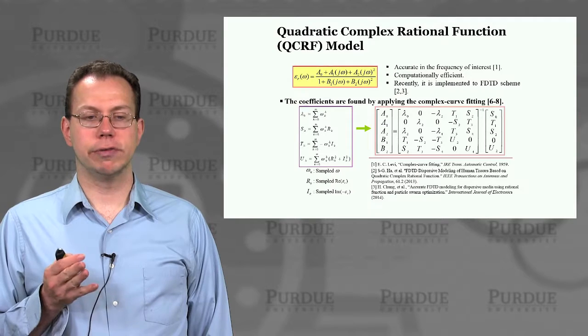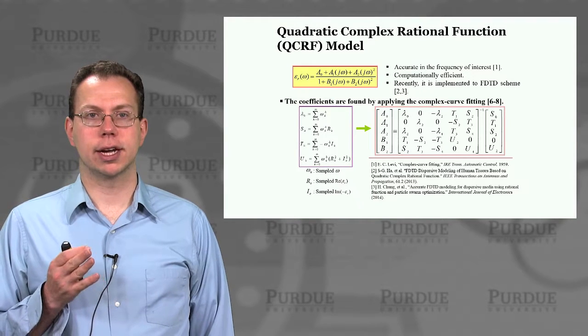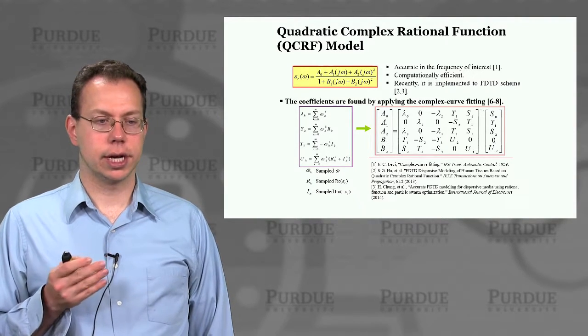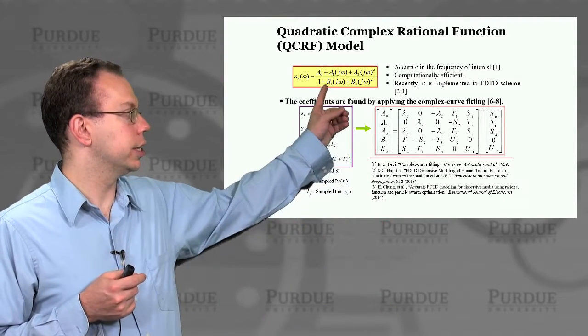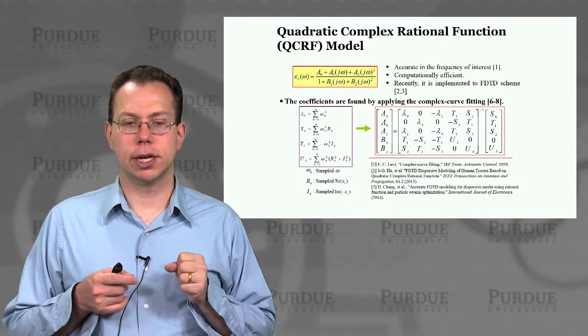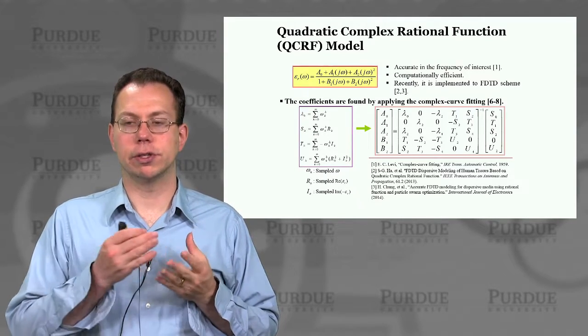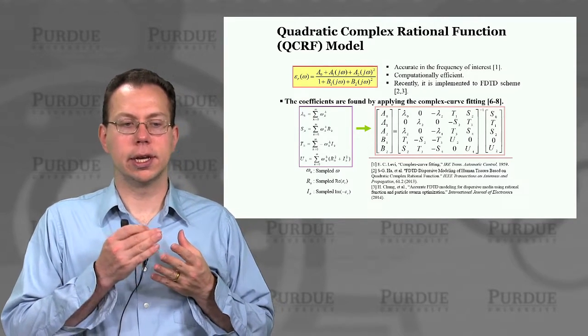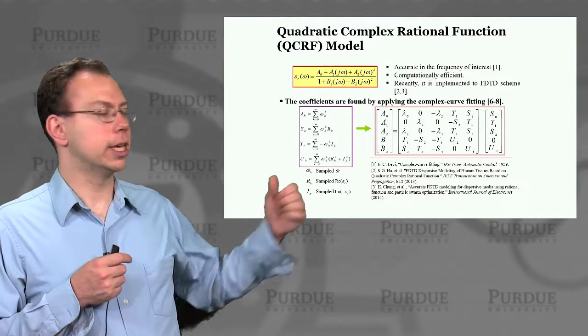Just to briefly go over what is this quadratic complex rational function, or QCRF. This is essentially showing the equation. We're assuming that our epsilon is complex value, so we have real and imaginary parts, and we can represent it in this form.